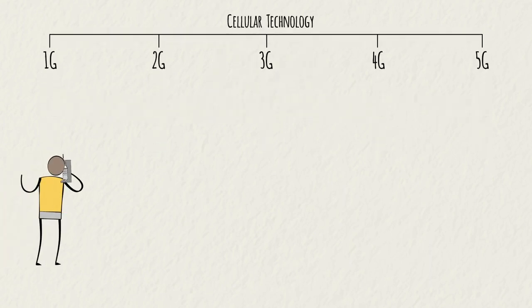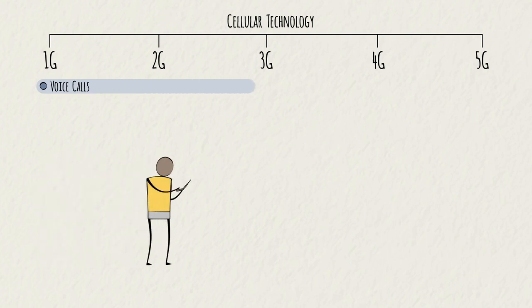The first generation, or 1G, only allowed voice calls. 2G added the ability to transmit small amounts of data, introducing text messaging.